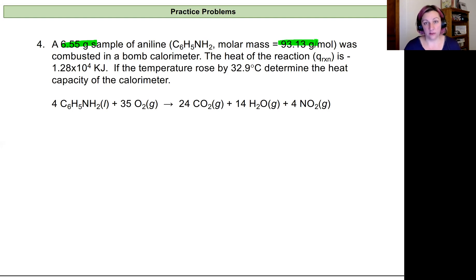We put it into a bomb calorimeter and ignite it, and the heat of the reaction is recorded at 1.28 times 10 to the fourth kilojoules. During that time period, the temperature rises by 32.9 degrees Celsius, so that is our change in temperature, and the question is, what is the heat capacity of the calorimeter?